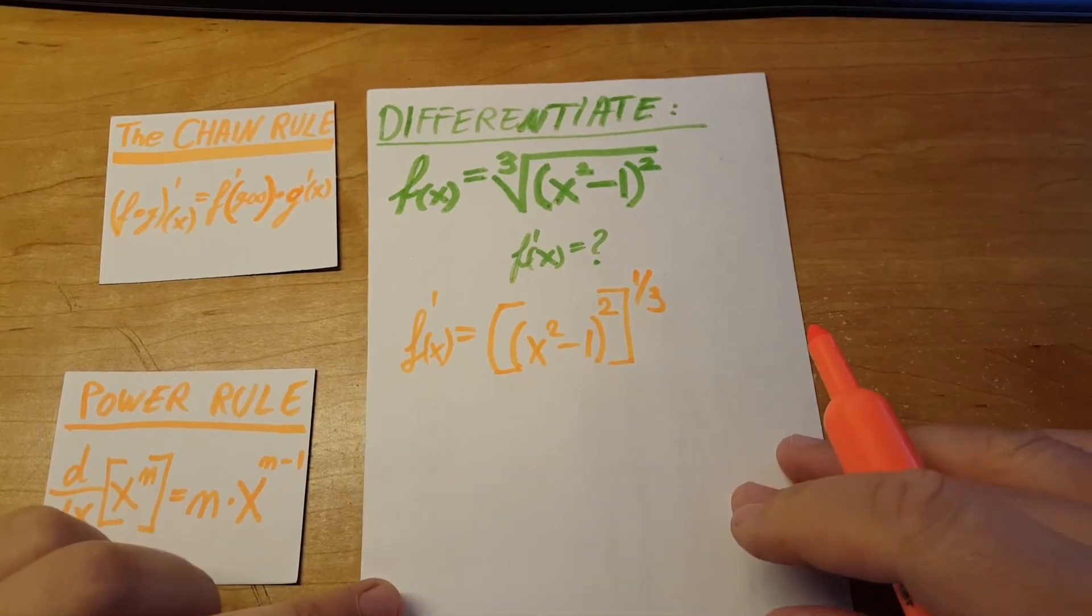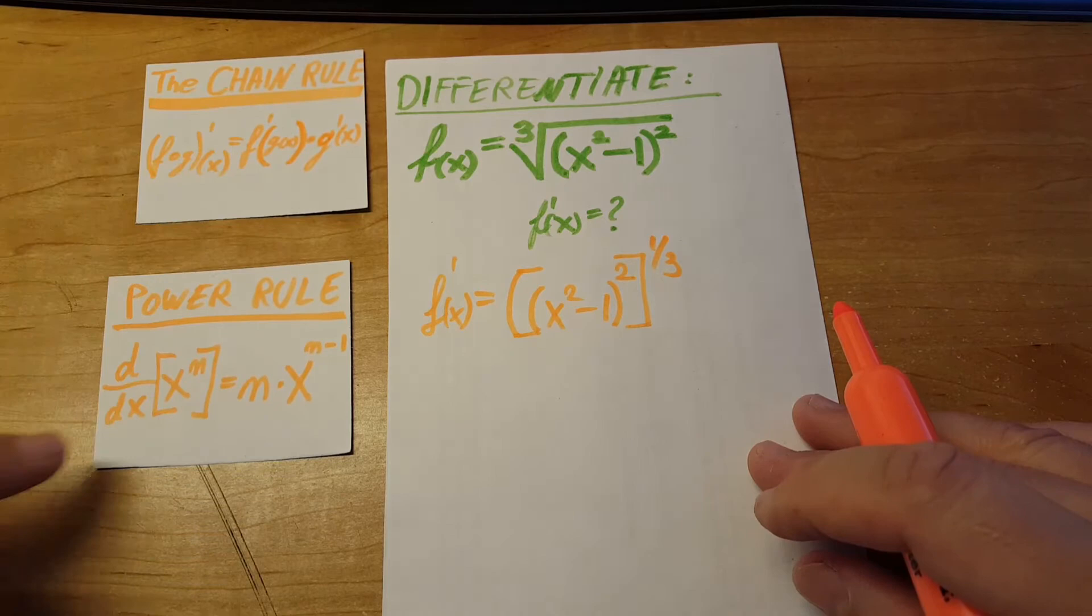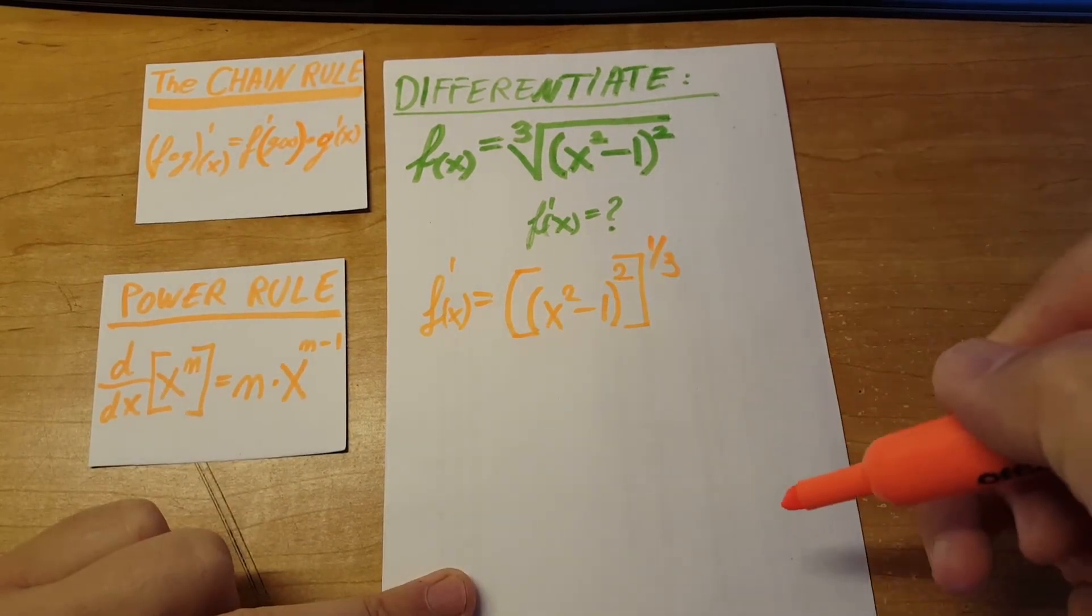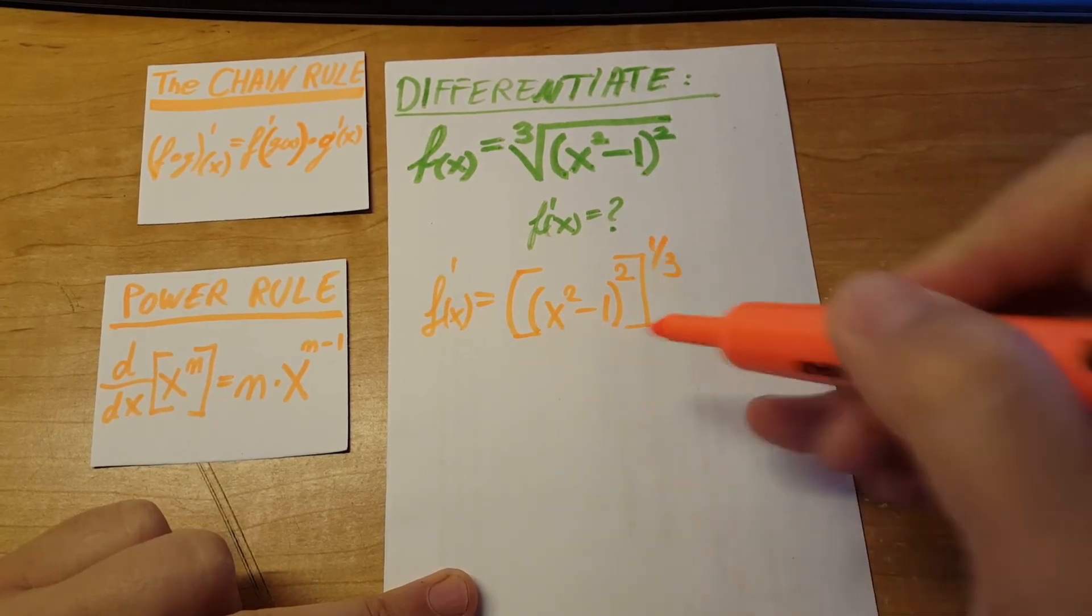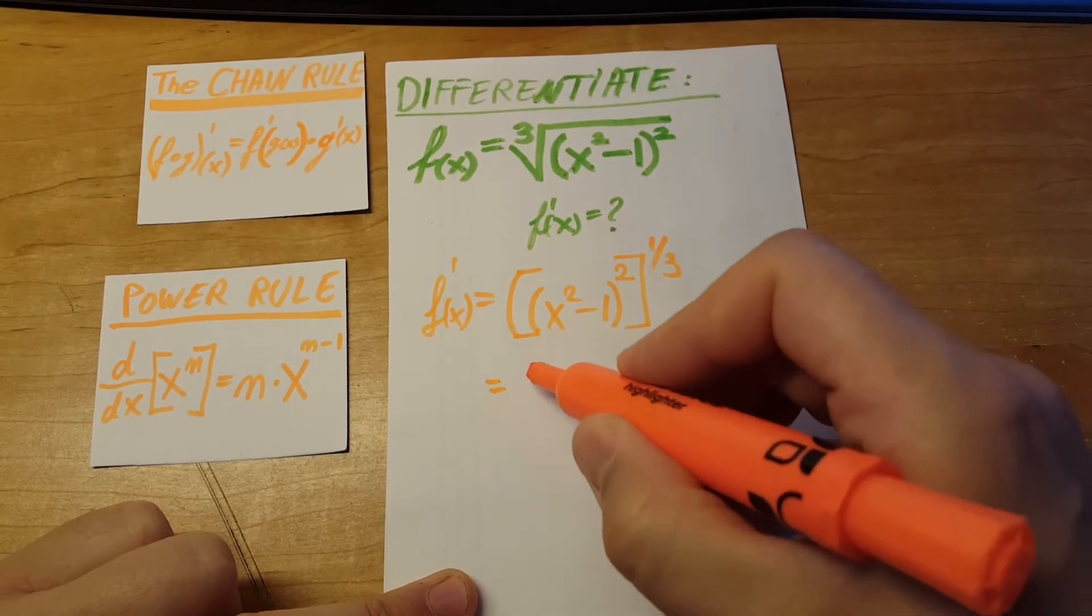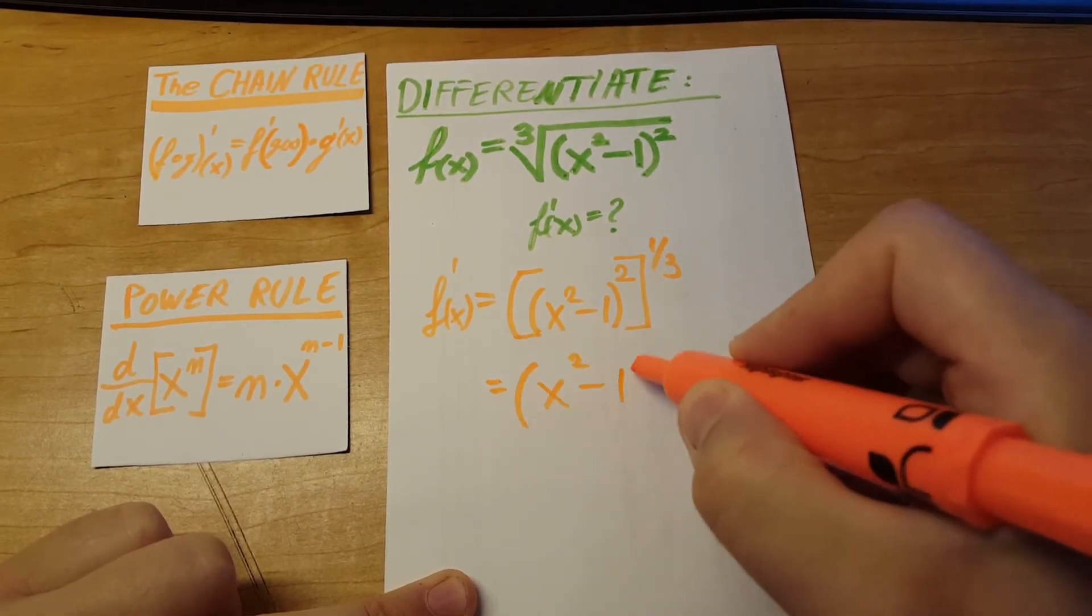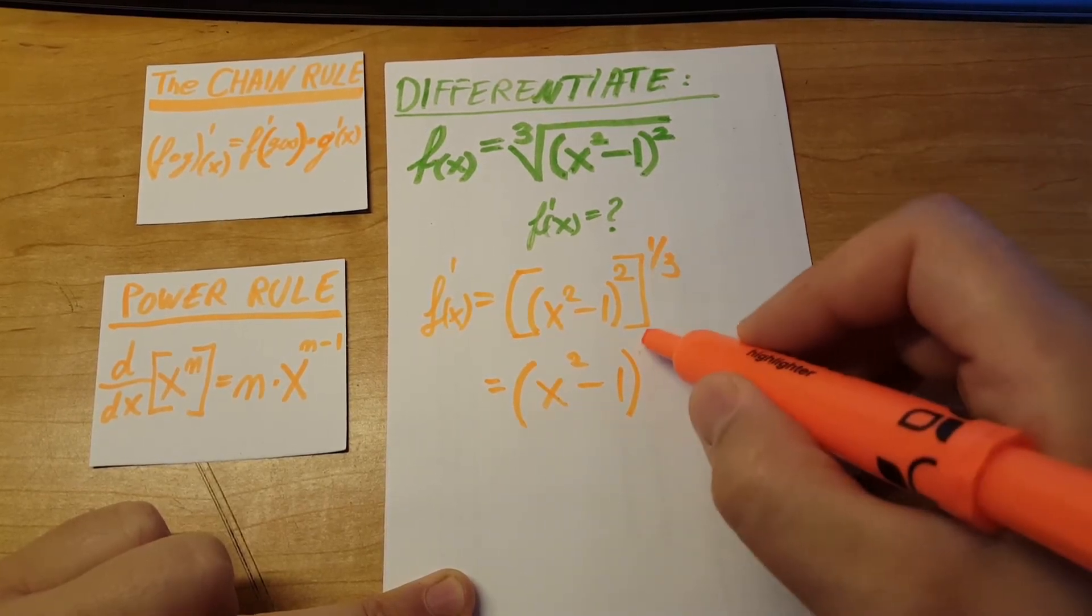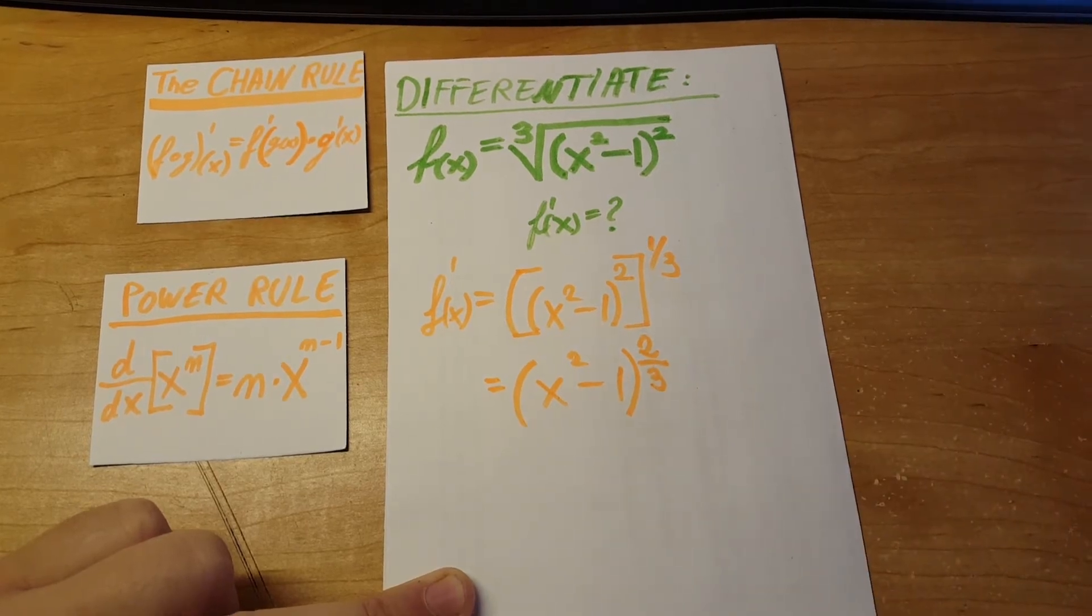And now, much easier to see what we need. We're going to use the power rule to bring this down. Well actually, we're going to put the two powers together first. So we're going to have x square minus one and multiply together. So it's going to be on the power of two third.